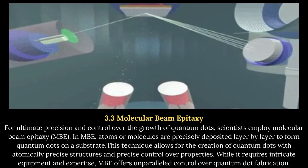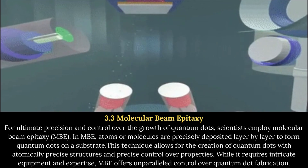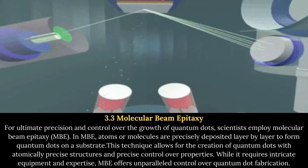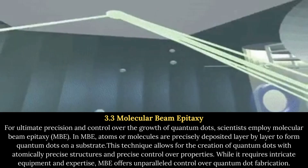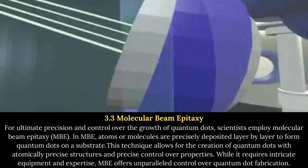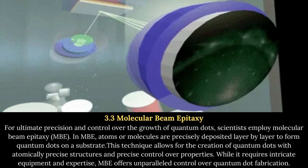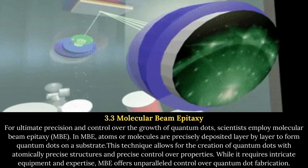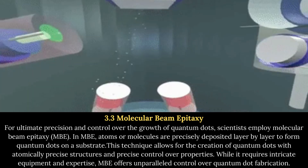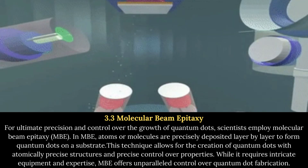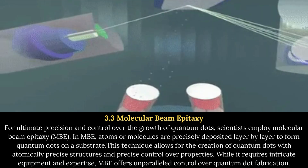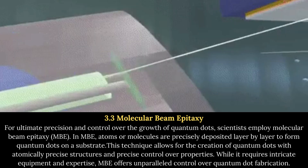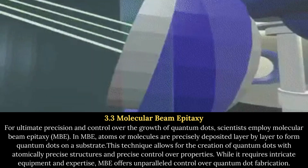3.3 Molecular Beam Epitaxy. For ultimate precision and control over the growth of quantum dots, scientists employ Molecular Beam Epitaxy, or MBE. In MBE, atoms or molecules are precisely deposited layer by layer to form quantum dots on a substrate. This technique allows for the creation of quantum dots with atomically precise structures and precise control over properties. While it requires intricate equipment and expertise, MBE offers unparalleled control over quantum dot fabrication.